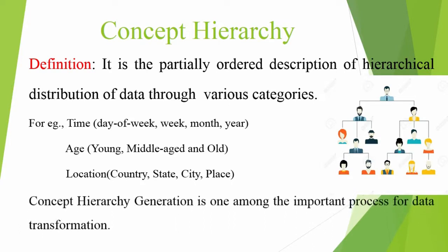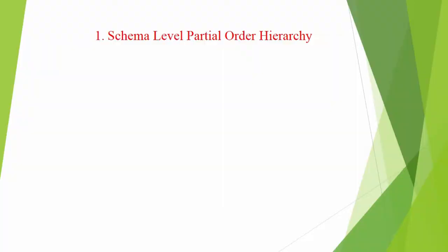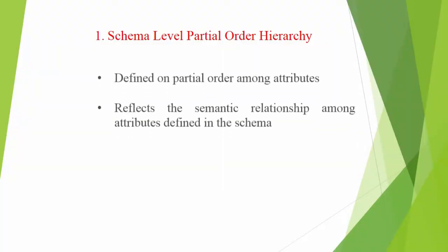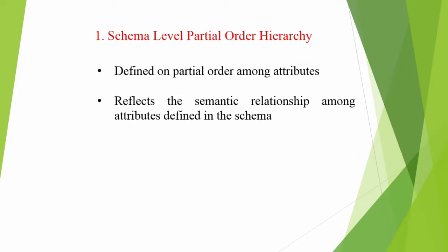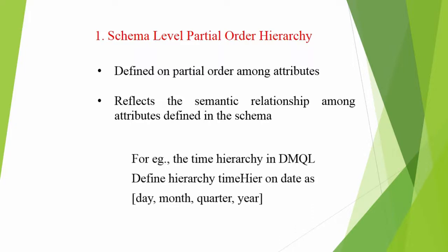We can see a concept hierarchy for the dimension location also, as country, state, city, and place. Now let us discuss the four ways in which concept hierarchy generation can be defined. One: schema level partial order hierarchy. This kind of hierarchy is formed by defining partial order among attributes to reflect the semantic relationship among attributes defined in the schema. For example, the time hierarchy can be defined in DMQL (Data Mining Query Language) as: define hierarchy time higher on date as day, month, quarter, year.